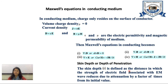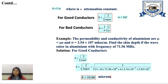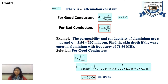The next topic is skin depth or penetration depth. The skin depth is denoted by delta and is defined as the distance in which the strength of the electric field associated with an EM wave reduces, due to attenuation, by a factor of 1/e times its initial value. The skin depth delta equals 1 over alpha, where alpha is the attenuation constant.